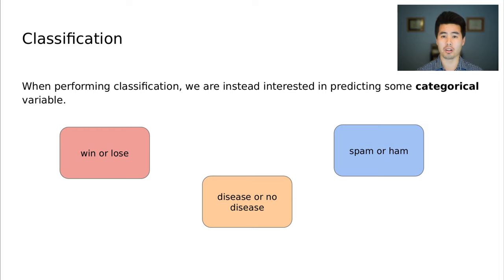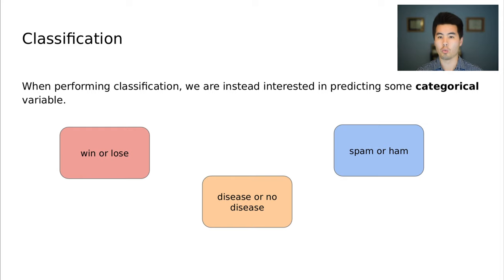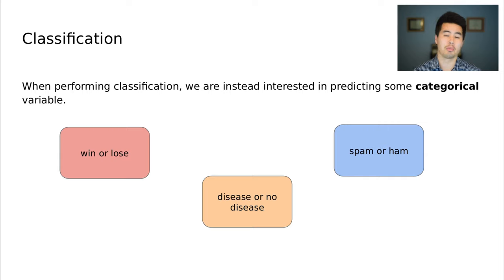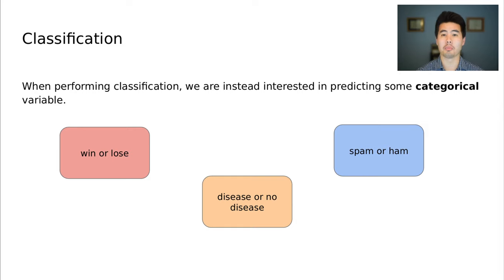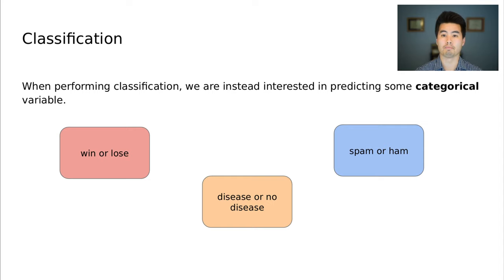For most of today we're going to talk about binary classification — yes or no, whether the data point belongs to one class or another. In a sporting event this could be your team wins or loses; in spam detection, either it's spam or it's not spam, which we call ham; or in a biomedical domain, whether a patient has some condition or does not. These aren't real-valued outputs like regression but take a number of discrete choices.